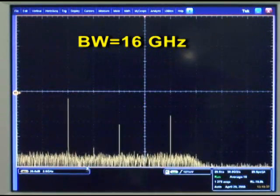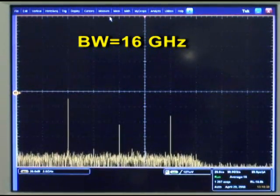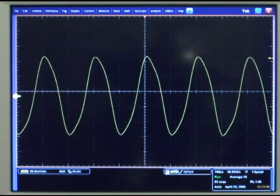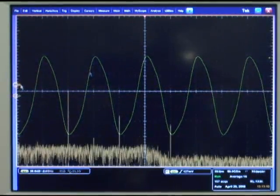The point being, without the DSA 70,000's extra bandwidth to capture those important frequency components, this signal will not show its true shape. To illustrate this point, let's turn the bandwidth of the DSA 70,000 series back down to 13 GHz.